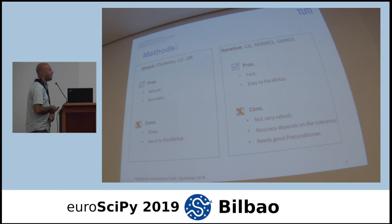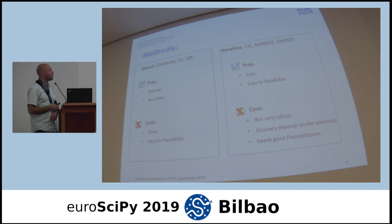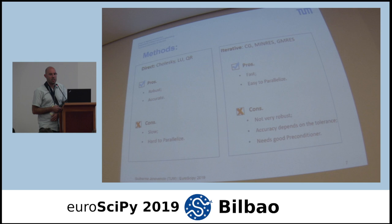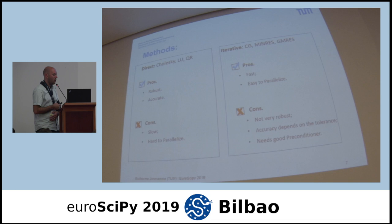We can talk about two different families of solvers. One is direct methods — Cholesky, LU decomposition, QR factorization. They are very robust and precise, but they are slow and hard to parallelize. The other family is iterative methods, like CG, GMRES, and MINRES. These are fast and easy to parallelize since we are essentially doing matrix multiplication, but they need good preconditioners and their accuracy depends on the tolerance we set.